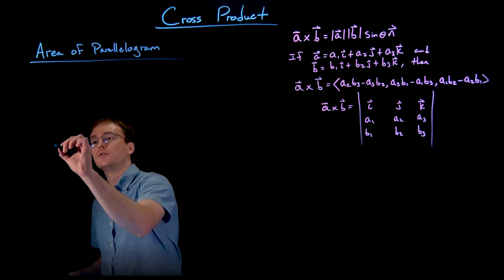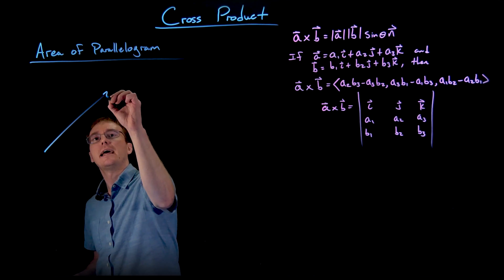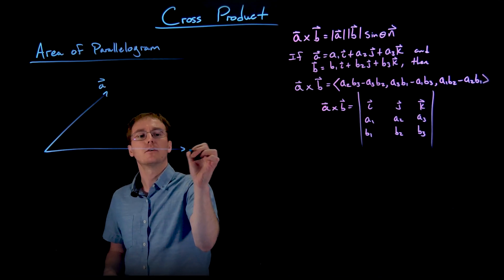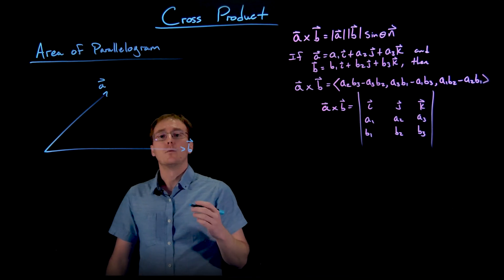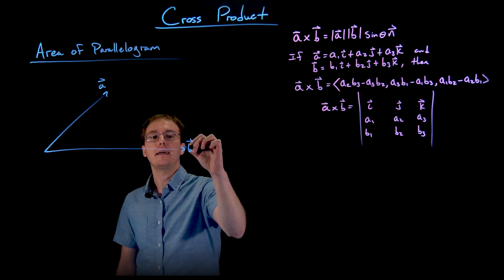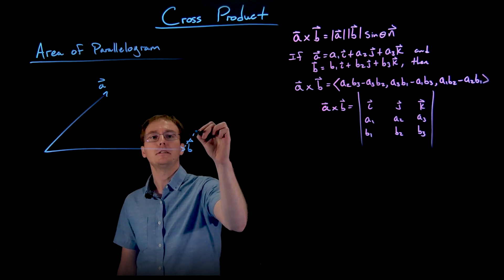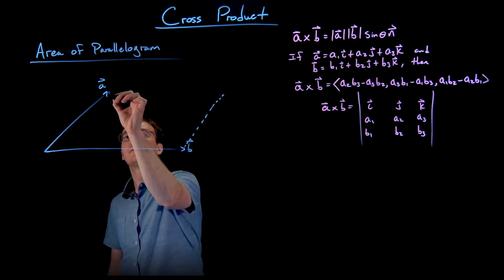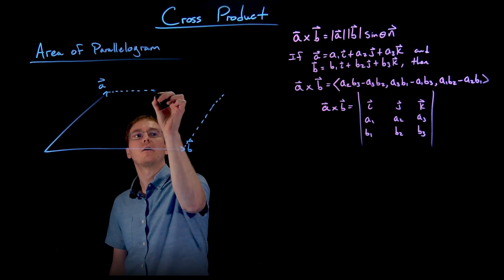So suppose we have our two three-dimensional vectors: A maybe looks like this, and let's just say B looks something like this. Well then we can create a parallelogram by placing another copy of our vector A at the tip of our vector B, and likewise another copy of our vector B at the tip of our vector A.